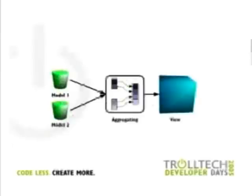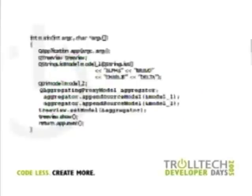The last thing I want to show you — and this is not in Qt 4.1, this is aggregating models. We have a running prototype at Trolltech that will probably be part of Qt 4.2. It has several source models and presents them all to the view as one model. In this case, I aggregate a QStringListModel with a QDirModel, so you get a view of first a couple of strings and then the whole file system.